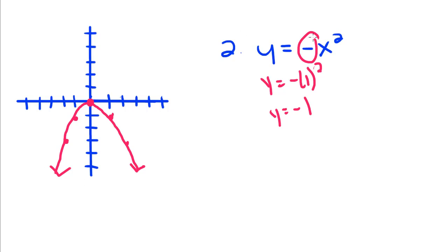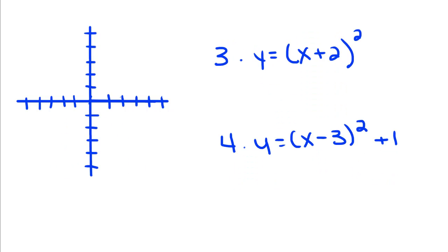When you have a negative out front, you're going to have a downwards parabola. If you have a positive out front, it's going to be up. And now we're going to do two more ones.